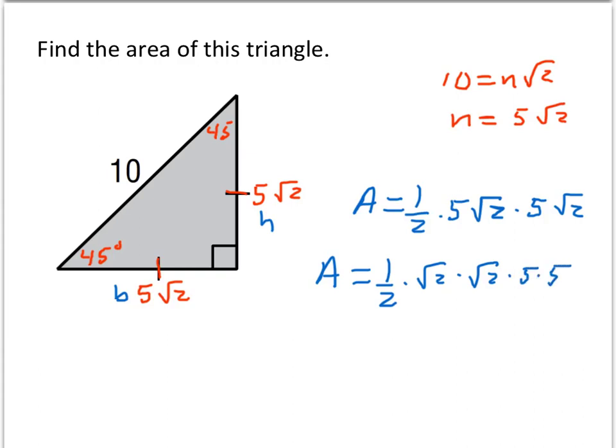So we can call this 1 half times root 2 times root 2 times 5 times 5. And root 2 times root 2, well, that's just the square root of 4, which is 2. Times 5 times 5, which is 25.